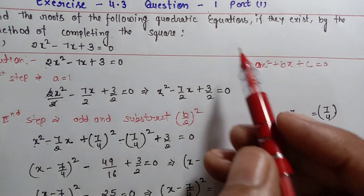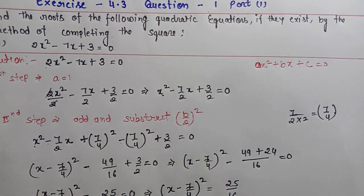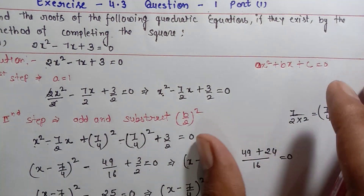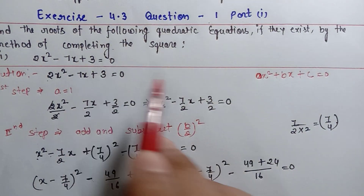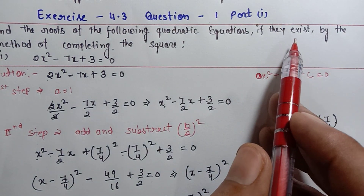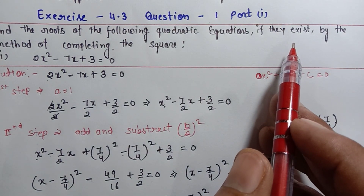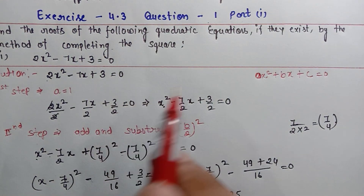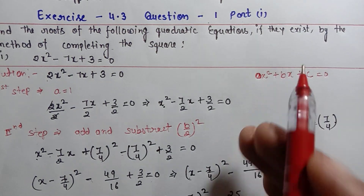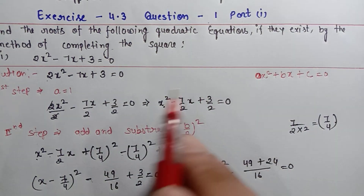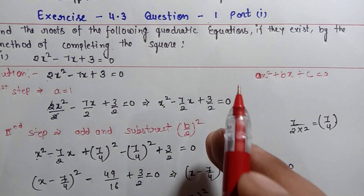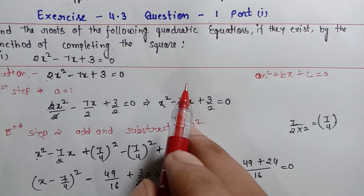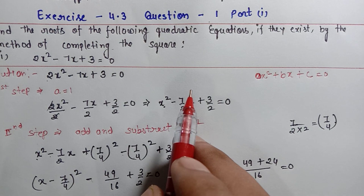Exercise 4.3 Question 1 Part 1 के 2 roots आपने completing the square method से find कर लिए हैं। I hope आपको यह question अच्छे से समझ में आया होगा। अगर कोई doubt है तो comment box में comment करें। अगर वीडियो पसंद आई तो like करें, channel को subscribe करें, और bell icon को press करना न भूलें। Thank you।